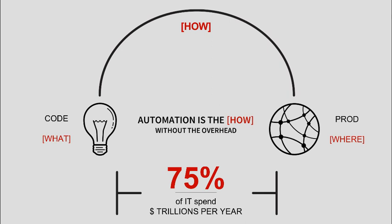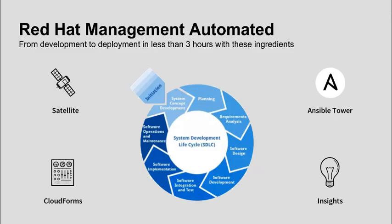Roughly 75% of IT groups spend over trillions of dollars a year on software — not a small margin of funds. Red Hat management automated from development to deployment in less than three hours with the right ingredients. Let's dig into these solutions: getting from development to deployment in three hours or less sounds amazing, but how can you do something like that?